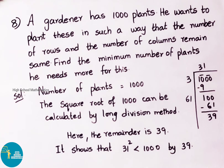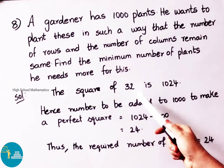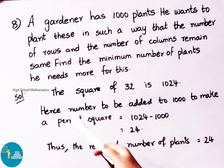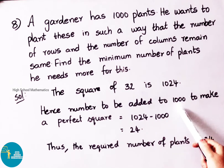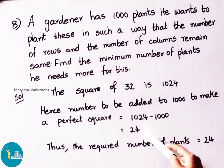Now let us take the next perfect square after 31 squared, that is 32 squared, and subtract 1000 from that number to get the perfect square. The square of 32 is 1024. Hence the number to be added to 1000 to make it a perfect square is 1024 minus 1000, that is 24. Thus the required number of plants is 24.